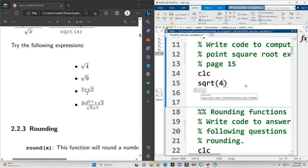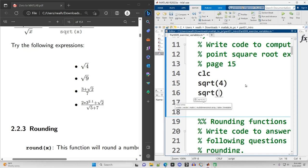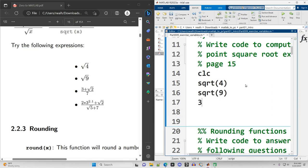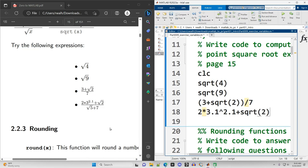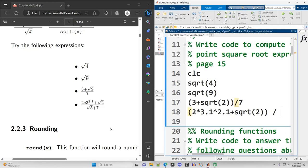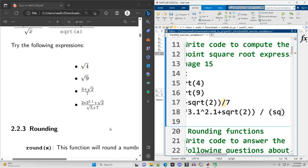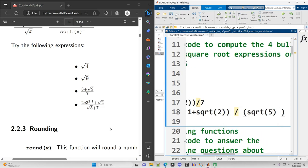Square root of 4, sqrt parentheses 4, square root of 9, sqrt parentheses 9, 3 plus the square root of 2 over 7. Now it would be wrong to just do a divide by 7. I need to make sure that I use parentheses to indicate that that whole numerator should be grouped, that whole thing should be divided by 7 right there. Next one's quite a bit more complicated, 2 times 3.1 raised to the 2.1 power plus the square root of 2 divided by, and all of that needs to be the numerator.